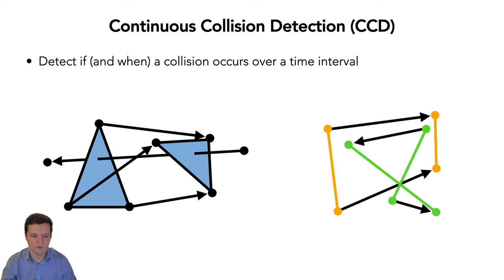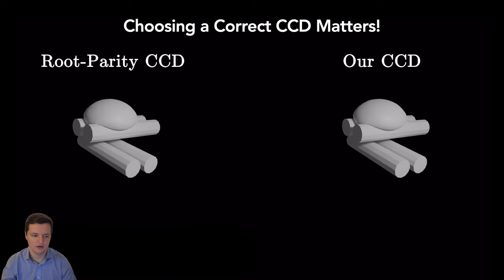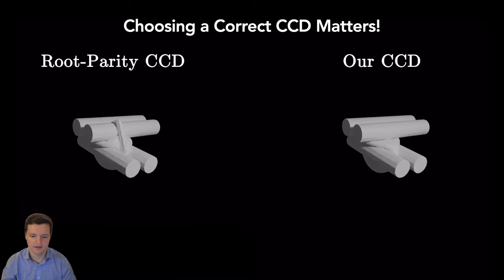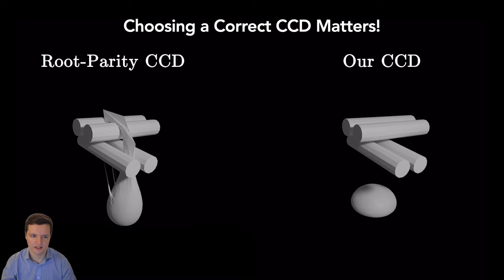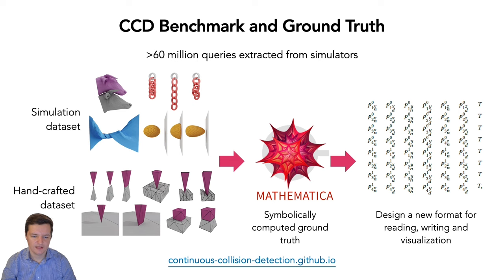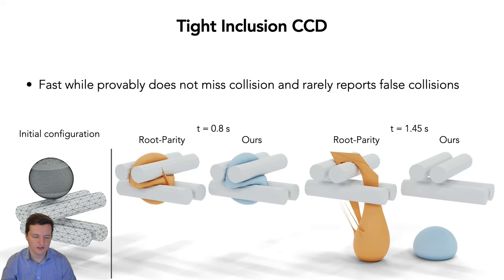CCD detects if and when a collision occurs over a time interval. However, choosing a correct CCD method matters as inaccurate methods can lead to missed collisions or intersections. This is why, in a follow-up work, we introduced a CCD benchmark with ground truth for over 60 million queries extracted from simulators. And we introduced the first efficient, provably conservative method, tight inclusion.